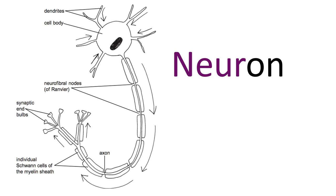A neuron is a single nerve cell. For example, we have a motor neuron with a cell body and an axon going to synaptic end bulbs, which communicate with a muscle. A neuron is just an individual nerve cell — you might talk about relay neurons, sensory neurons, or central and peripheral nervous system neurons. It just means an individual nerve cell, a neuronal cell.